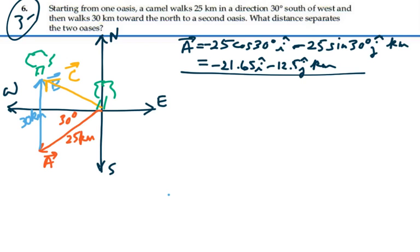On the other hand, B is totally in the positive y direction. So B is 30 kilometers in the j direction.